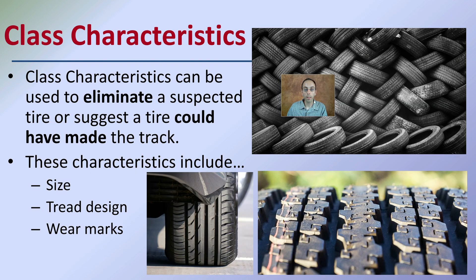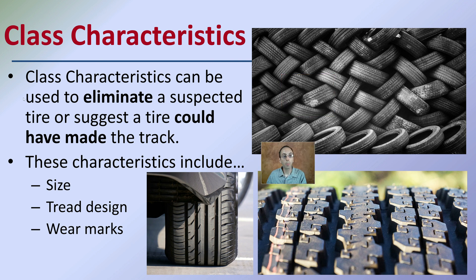These are class characteristics. Class characteristics can be used to eliminate a suspect's tire or suggest a tire could have made the track. These characteristics include the size, the tread design, and wear marks. These aren't individual characteristics — you're just saying the same class or general type of tire could have made those particular tracks.